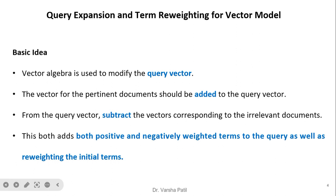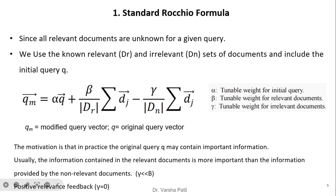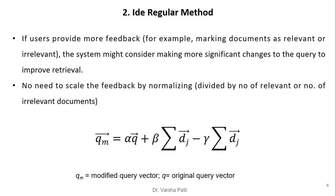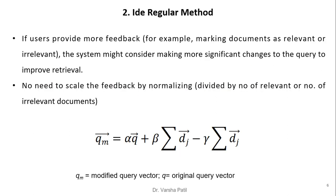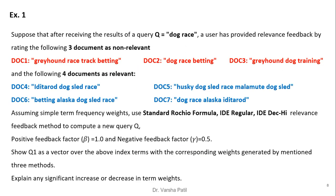For the vector model, vector algebra is used to modify the query vector. The vector for relevant documents is added to the query vector, and the vector for irrelevant documents is subtracted. This adds both positively and negatively weighted terms and reweights the initial terms. Three methods are used: the Standard Rocchio method, the IDF Regular method, and the IDF Decay (Deck High) method.